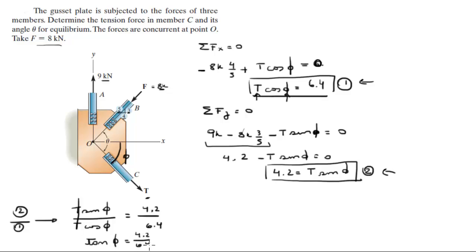So phi is equal to tangent inverse of 4.2 over 6.4, which means that phi is equal to 33.26 degrees.